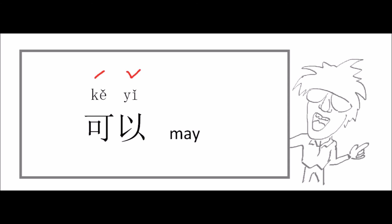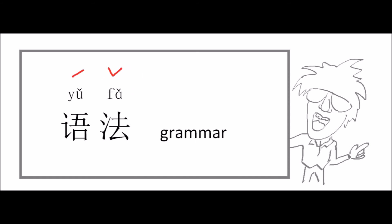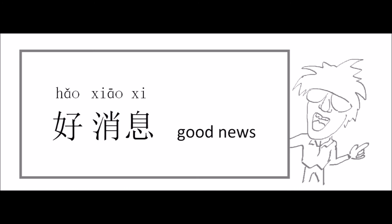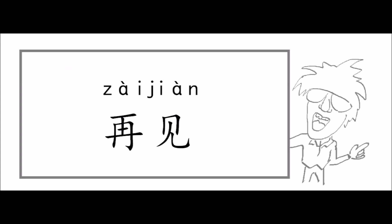可以, 可以. 语法, 语法, 语法. 法国, 法国, 法国. 好消息, 好消息, 好消息. That's all for today, Zaijian, Goodbye.